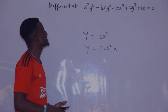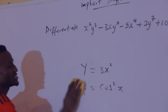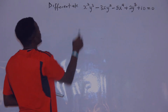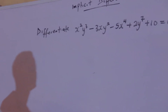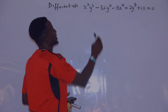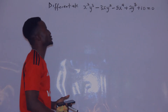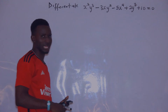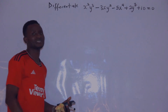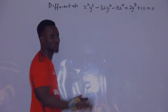But we are talking about implicit differentiation. Check this question out. The question says: differentiate x squared y cubed minus 3xy squared minus 5xy to the power 4 plus 2y raised to the power 7 plus 10. If you are going to differentiate this, you will observe that we have y and x together.